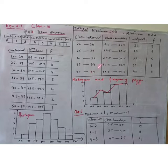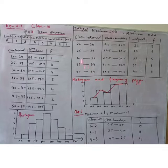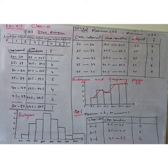To obtain corresponding frequencies, we check how many numbers lie between 20 and 24, how many for 25 to 29, how many from 30 to 34, and up to 40 to 44, and write those counts in the frequency column. We also make a class boundaries column to draw the histogram, since we need class boundaries along the x-axis. We also write down midpoints, which will be used for drawing the frequency polygon.